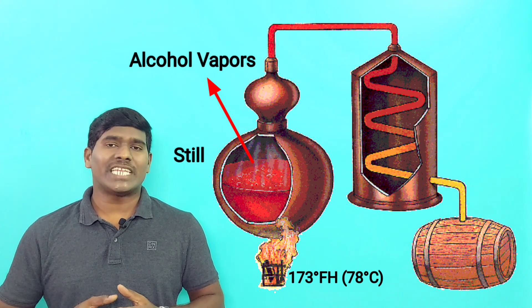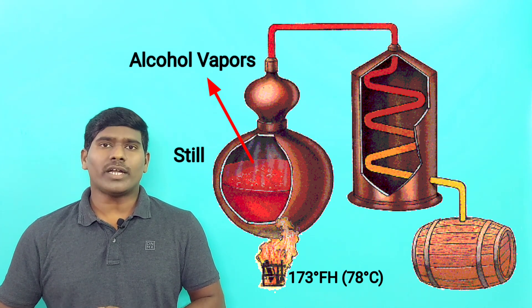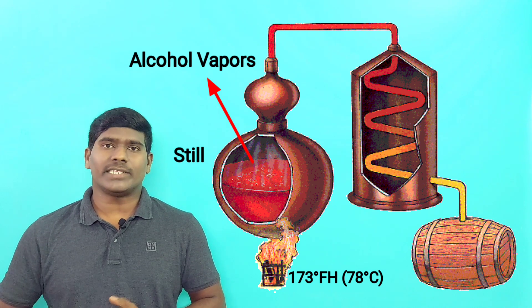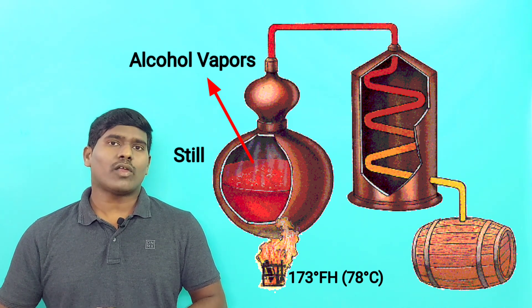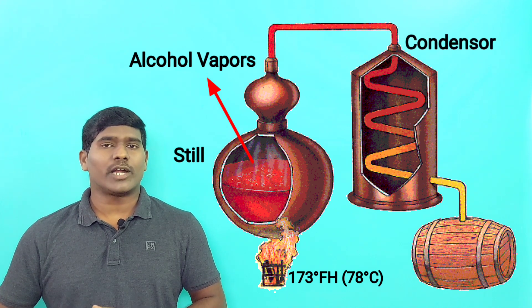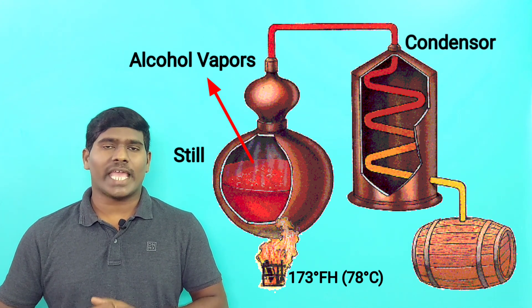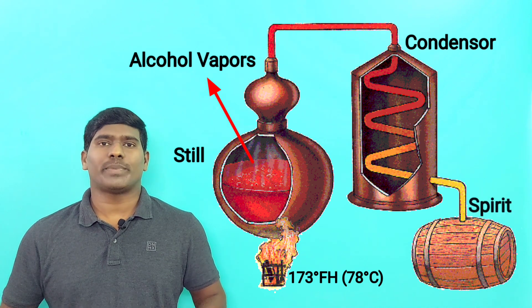Most of the water remains behind because water does not evaporate until it reaches the boiling point of 100 degrees Centigrade. Then the alcohol vapors are condensed and cooled down to a liquid form again. The resultant liquid is called spirit.